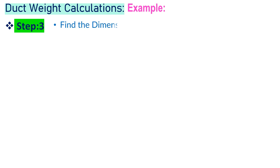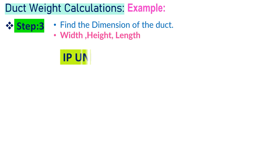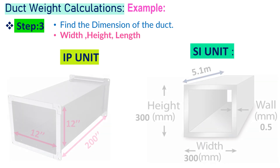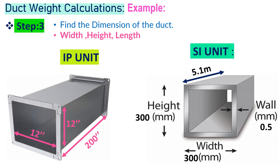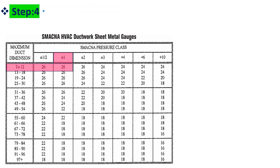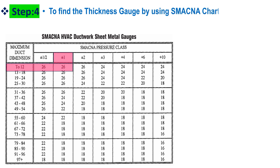Step 3: Find the dimensions of the duct — width, height, and length. Refer to the picture shown. Step 4: Define the thickness gauge by using the SMACNA chart. Match the duct size and corresponding pressure class to choose the duct gauge.